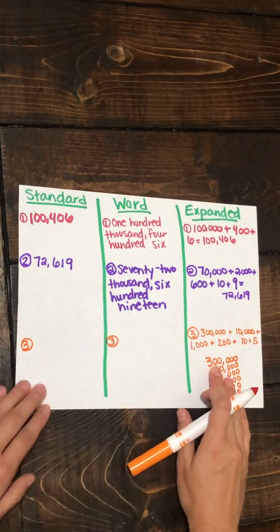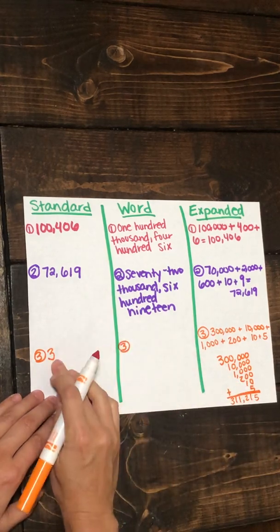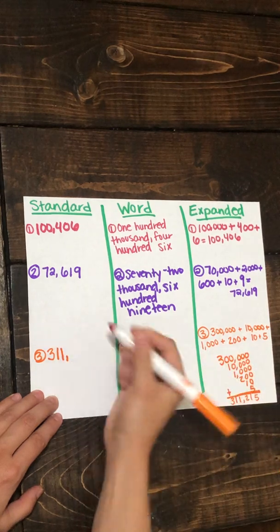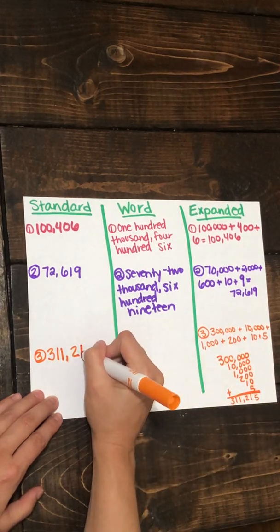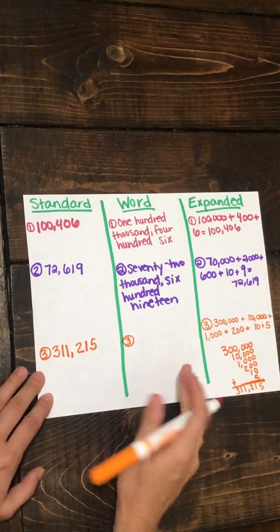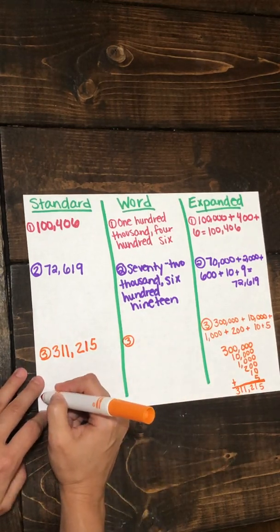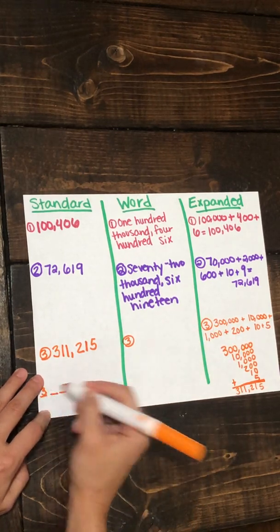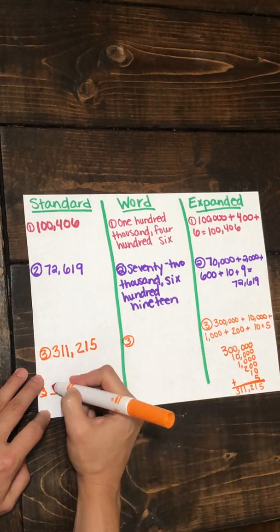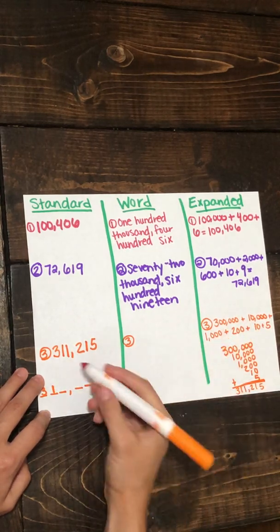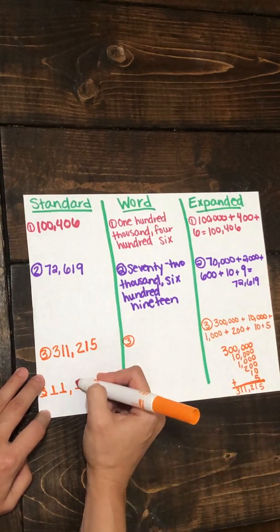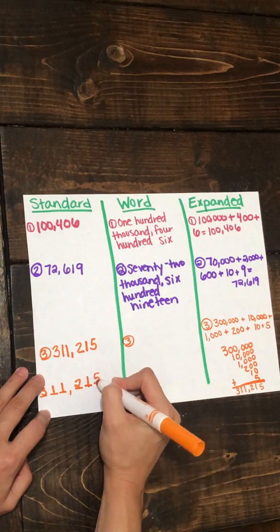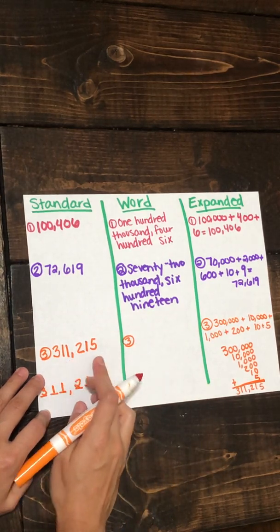We have 300,000 + 10,000 + 1,000 + 200 + 10 + 5. If I were to take it and check myself on a place value chart, I see that I have a 3 in the hundred thousands place, a 1 in the ten thousands place, a value of 1,000, a value of 200, 10, and 5. So I have 311,215.